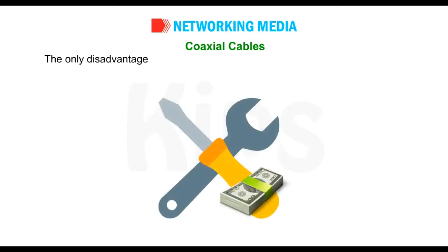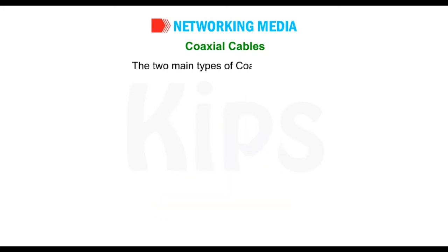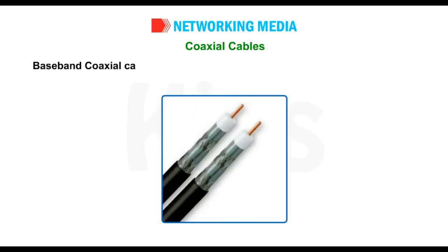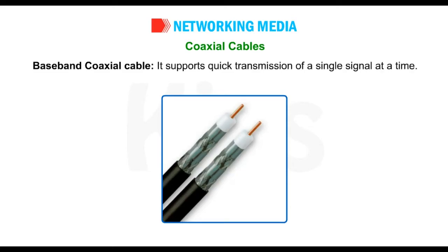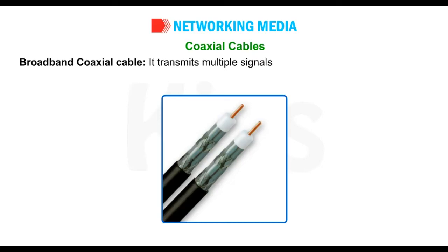The only disadvantage associated with coaxial cable is its high installation and maintenance cost. The two main types of coaxial cable are: Baseband coaxial cable, which supports quick transmission of a single signal at a time and is mainly used for LANs; and Broadband coaxial cable, which transmits multiple signals at the same time and is used for longer distances.